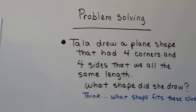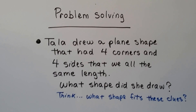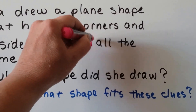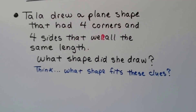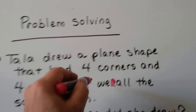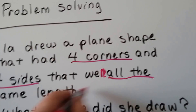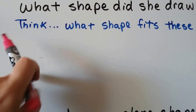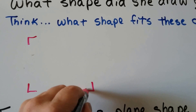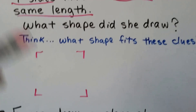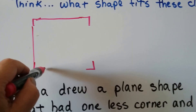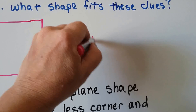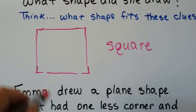Let's do some problem solving. Tala drew a plain shape — that means a flat shape — that had four corners and four sides that were all the same length. What shape did she draw? We have to think: what shape fits these clues? It's got four corners and four sides that are all the same length. If you said square, you're right. A square has four sides that are all the same length.